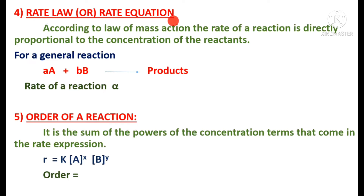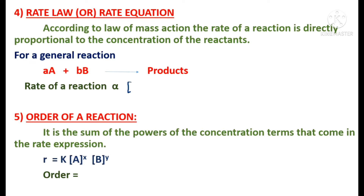The next important concept is the rate law or rate equation. According to the law of mass action, the rate of reaction is directly proportional to the concentration of the reactant. For a general reaction aA + bB → products, Rate ∝ [A]ᵃ[B]ᵇ, which gives: R = k[A][B]. Here k is the rate constant. This is the formula for the rate law or rate equation.